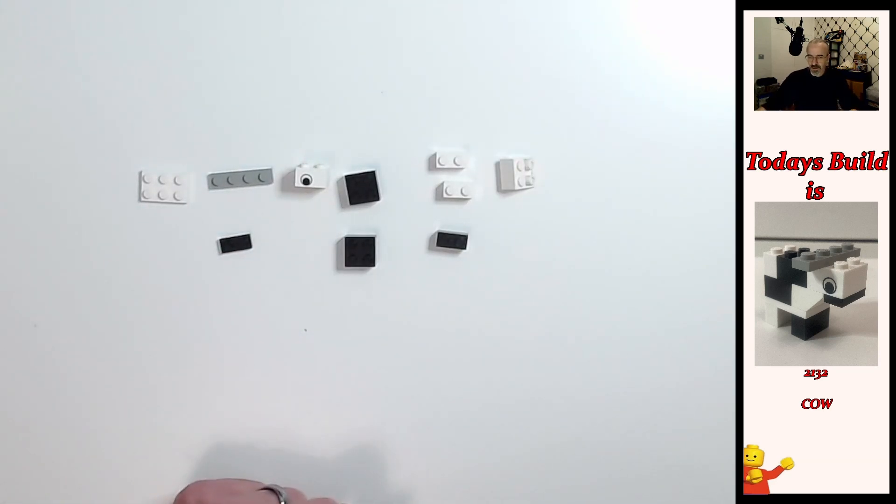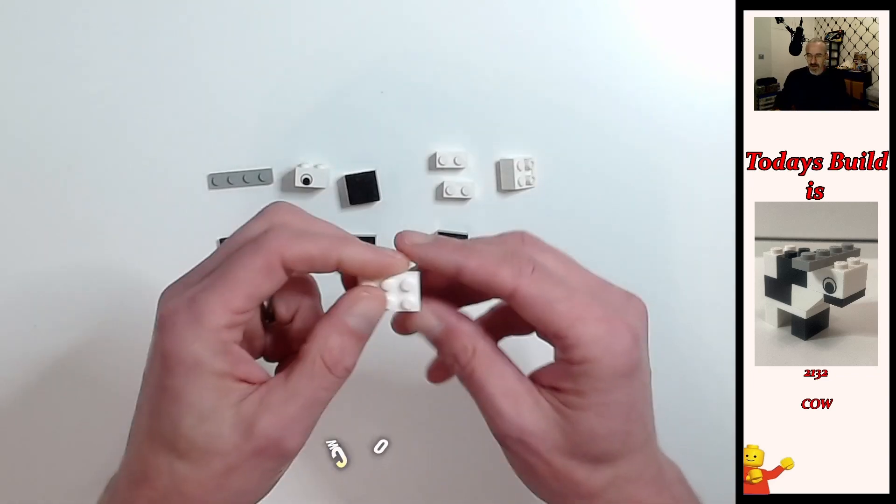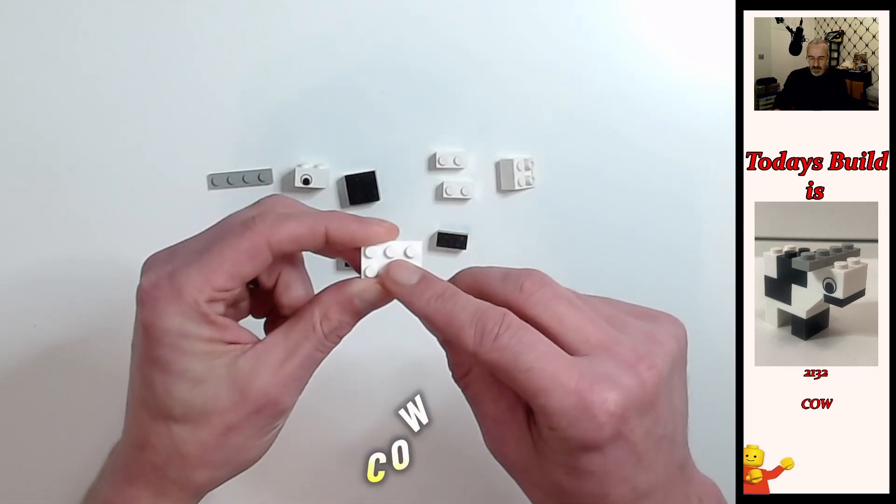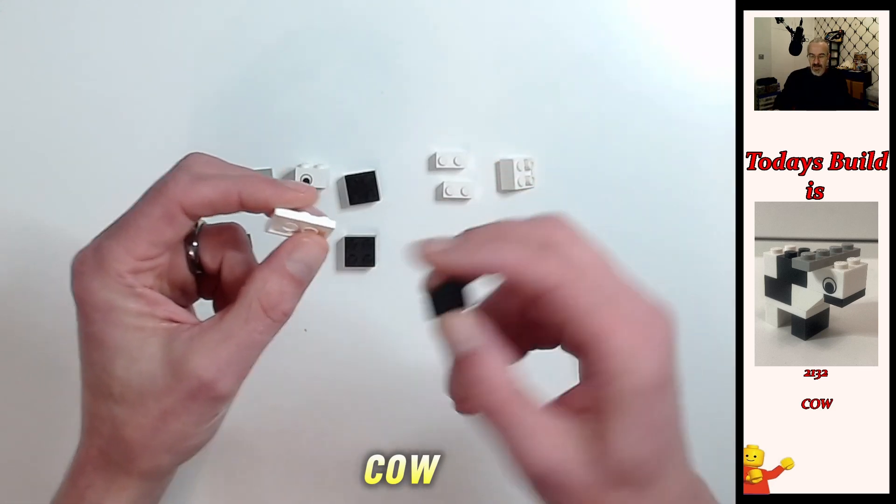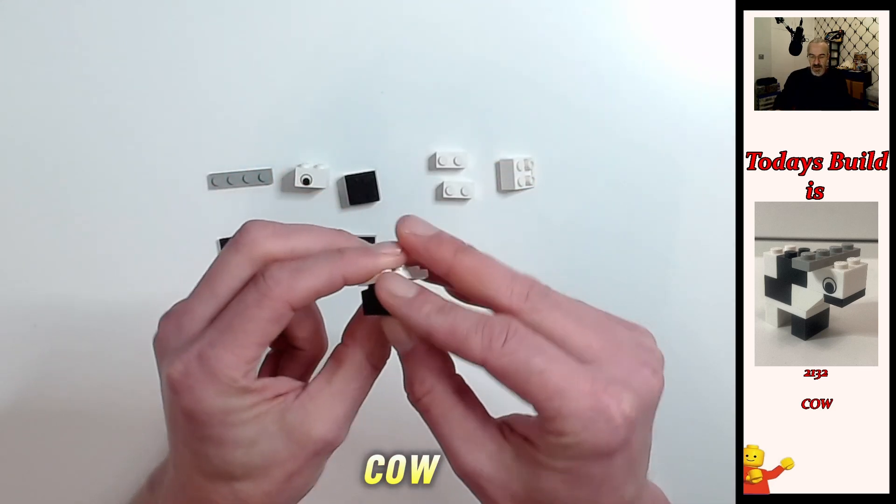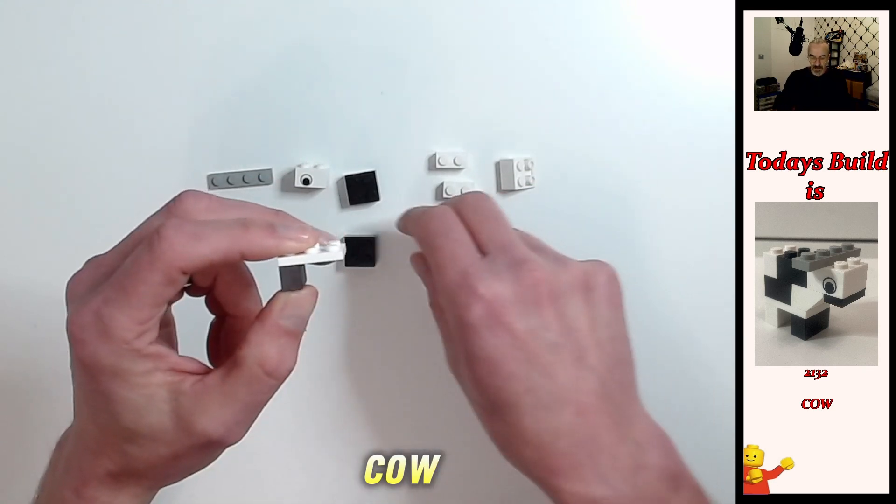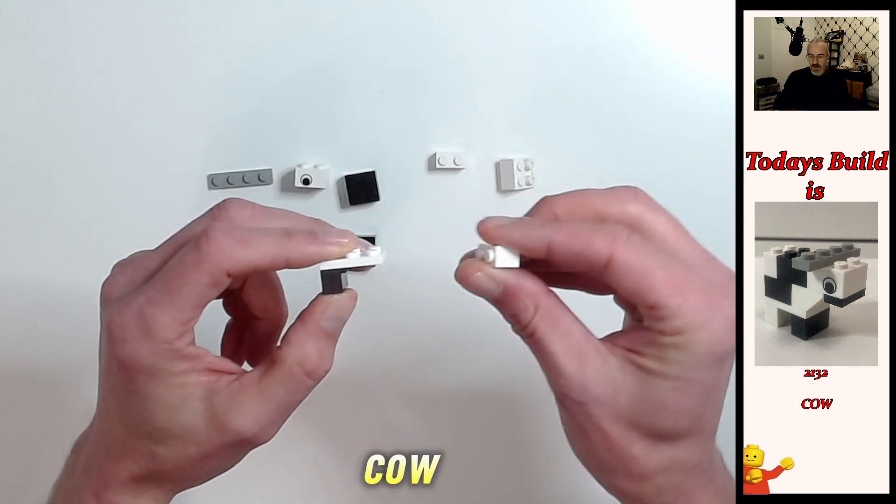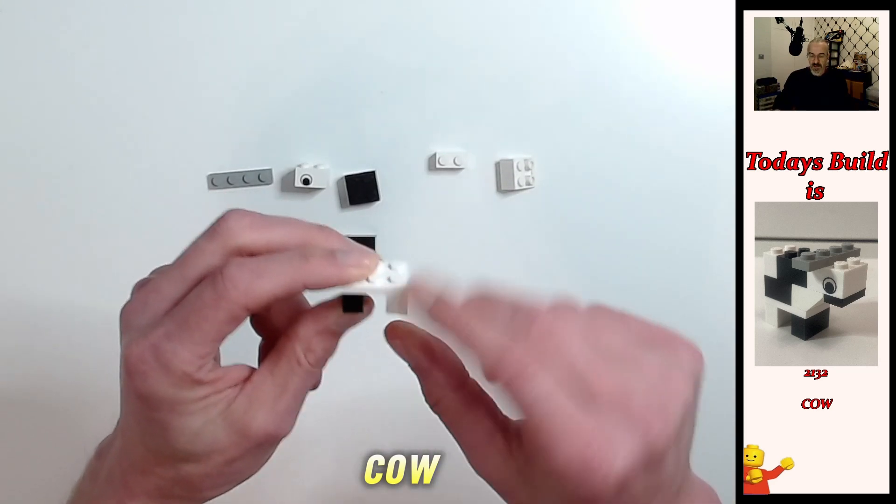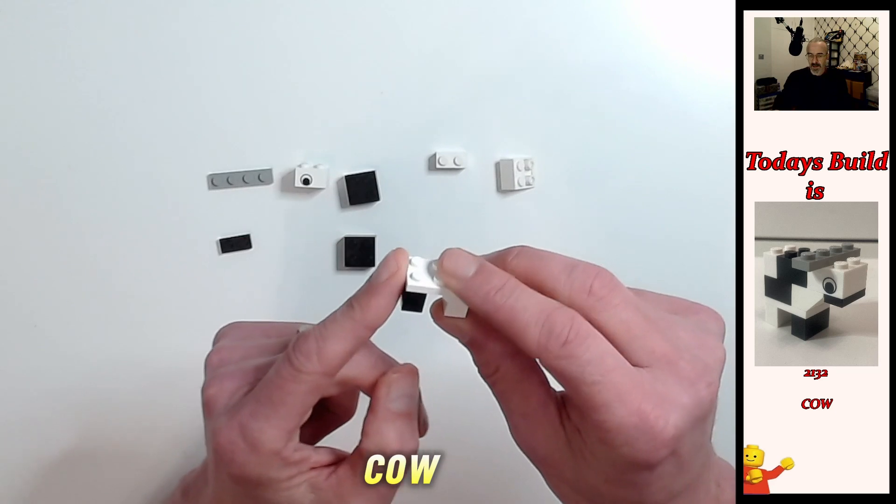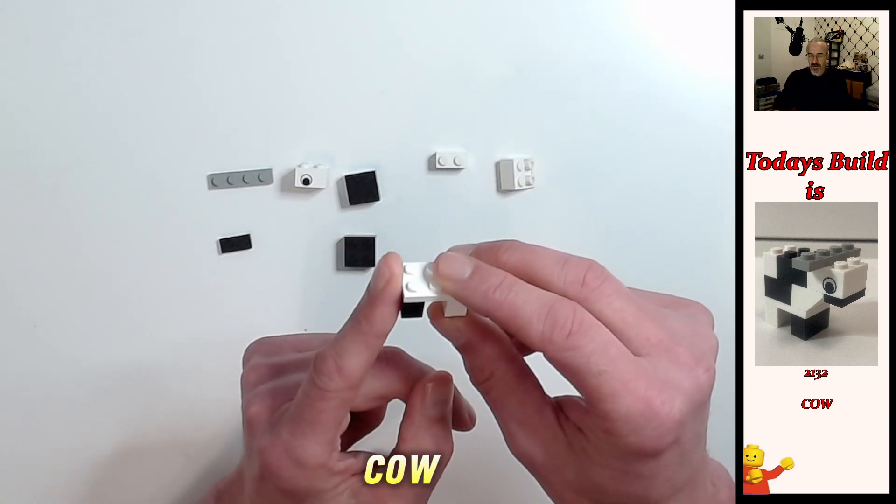So the build, this is kind of cool. We're going to start off with the two by three plate, this is going to be the base, and we're going to put a black one by two brick on the left hand side end of the plate and a white one by two brick on the right hand side of the plate, forming this little arch. The black brick, this is going to be the front of the cow.